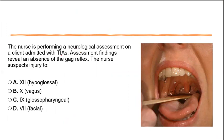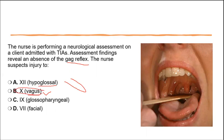Final question: a client admitted with a transient ischemic attack has an absent gag reflex. Which nerve is injured? It's not the hypoglossal nerve — that deals with the tongue. The correct answer is the vagus nerve (CN 10). To test for vagus nerve damage, use a tongue blade to depress the back of the tongue to elicit the gag reflex, or ask the client to say 'ah' while observing for uniform rising of the uvula and soft palate. Absence indicates damage to the tenth cranial nerve.